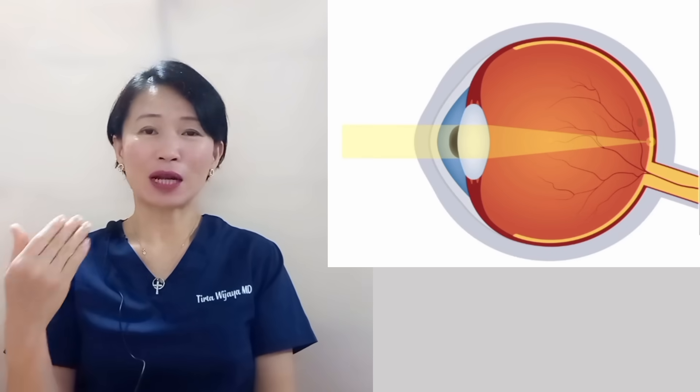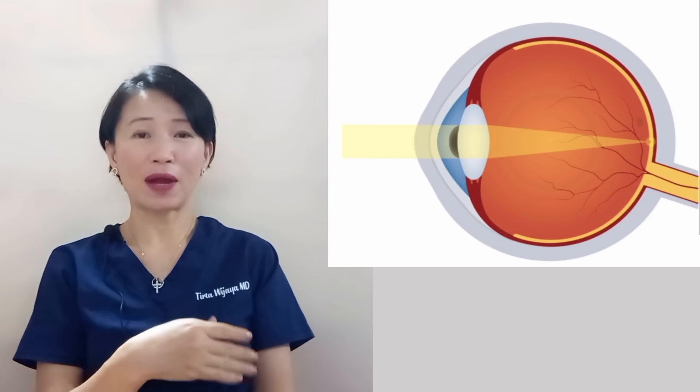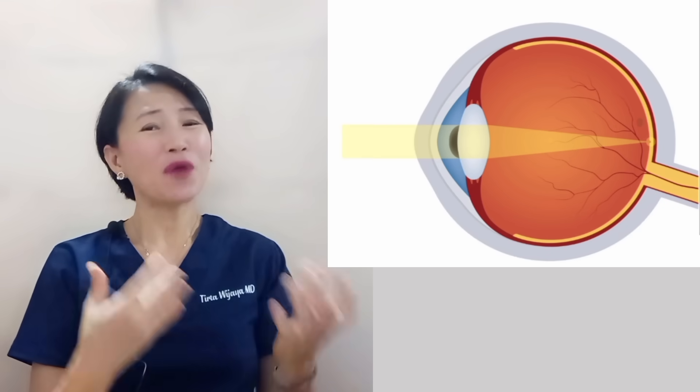The light then enters the lens to be refracted to the retina. The retina captures the image just like film in an analog camera does. This captured image is sent to the brain via the optic nerve for further processing. Normally the lens is flexible so it can be adjusted by the surrounding muscle to focus the image on the retina. When our eyes are not able to focus the image on the retina, we will have blurry vision. This is called refractive error.